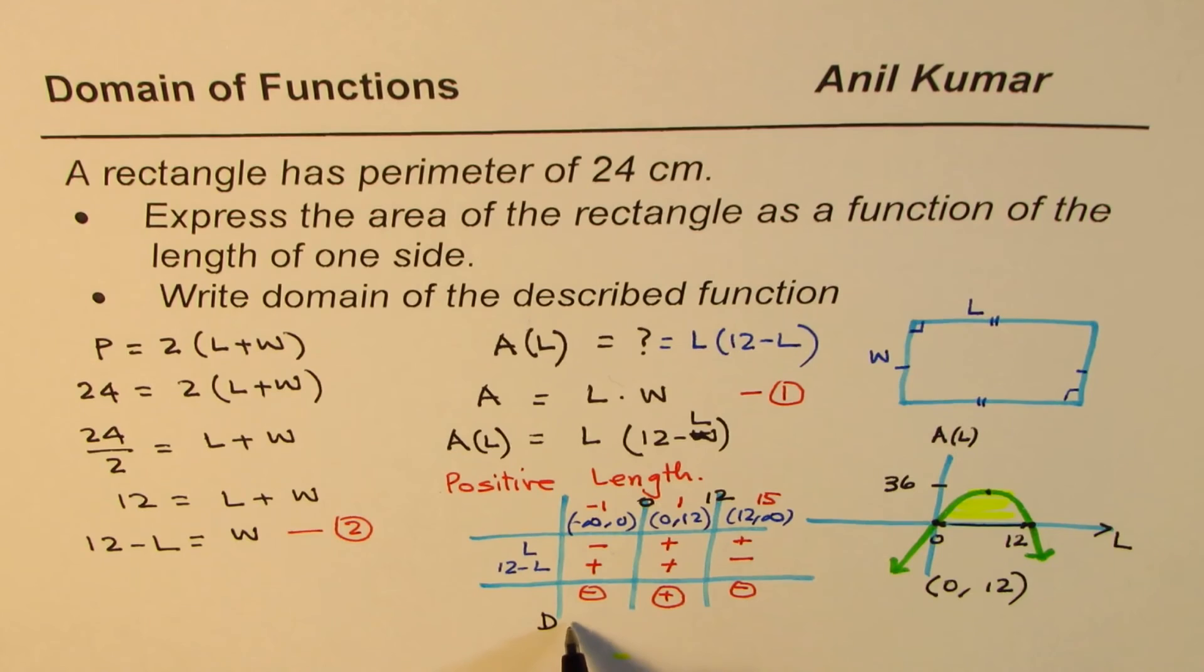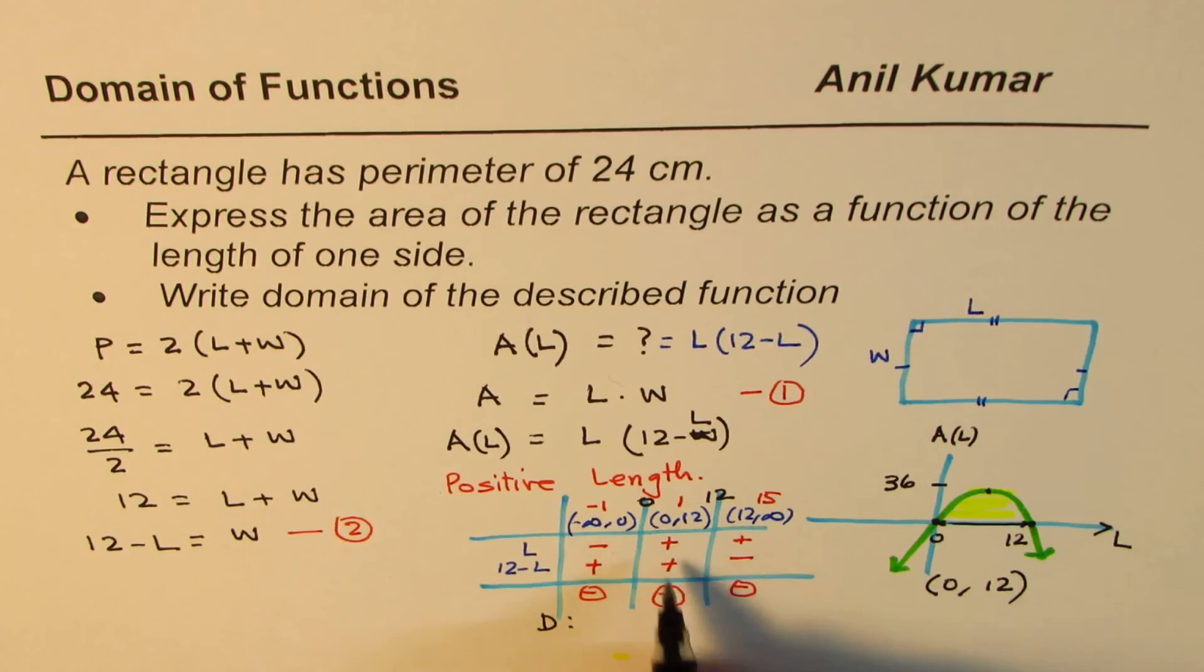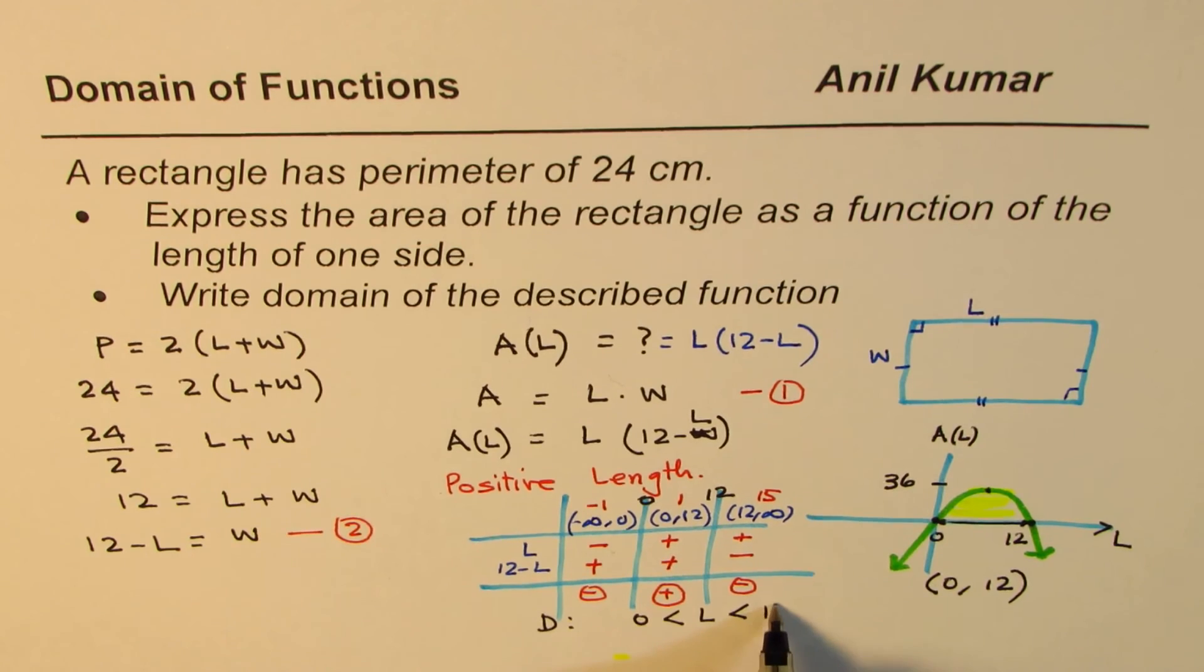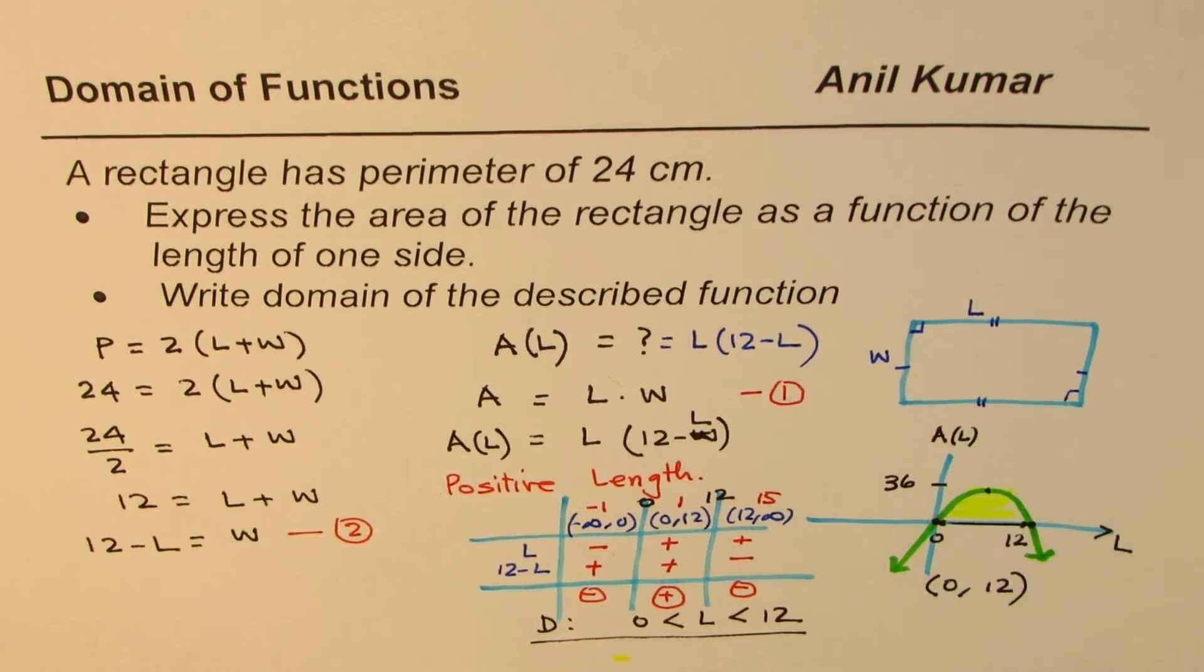So we know that only this interval 0 to 12 is the one where the value of L is positive. And therefore, the domain is between this interval. So it is between 0 and 12.